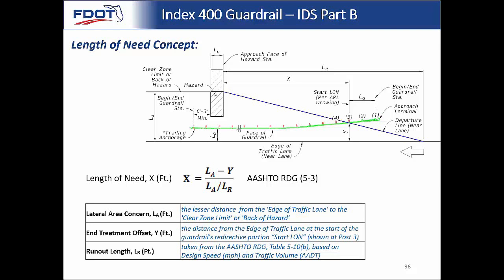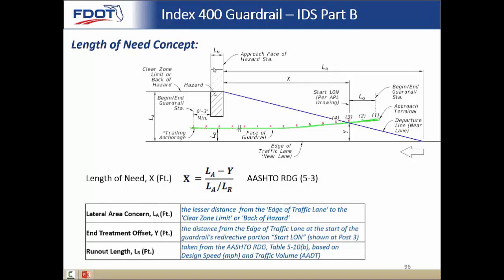Looking at the drawing, X is defined as your length of need — the shortest length of guardrail required, measured from the face of the hazard you're trying to shield to the beginning of the redirective guardrail portion, offset from the traffic lane. X comes from a simple equation from AASHTO Roadside Design Guide 5-3. For this most simple case we just have three variables: lateral area of concern (LA), the end treatment offset (Y), and the runout length (LR).